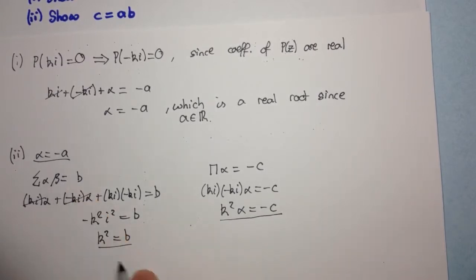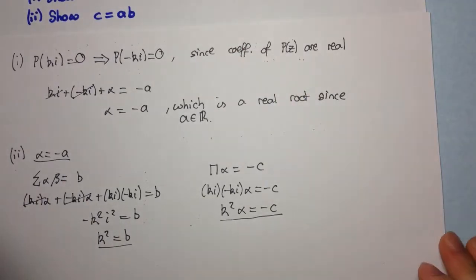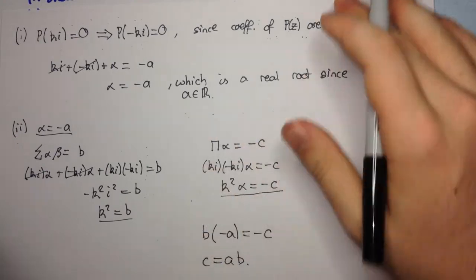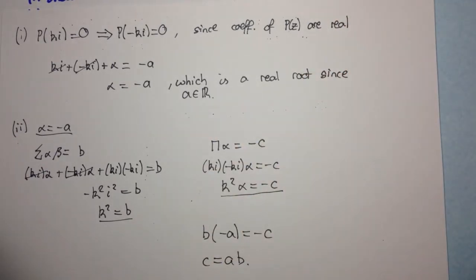Okay, so now we have our three fundamental, or three basic relationships. Now, we just need to combine them and see if we can get to what we need to show. Now, in this case, it's fairly simple to combine. We can just substitute our values straight in to this one. So, we have that Alpha is minus A, and we have that K squared is equal to B. So, when we combine them, we get B, so K squared is B, times Alpha, which is minus A, is equal to minus C. And so, simply, C is equal to AB. And that's, well, that's shown that relationship. Okay, and that's the end of the question. I hope you enjoyed.